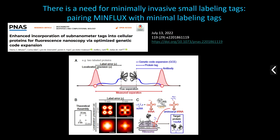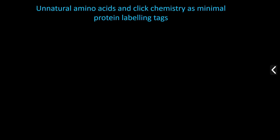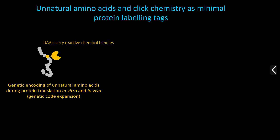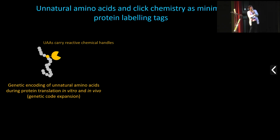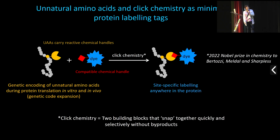This is discussed in a recent paper from Stefan Hell's group, where they introduce some of these minimal labeling tags, which are especially relevant when combined with MINFLUX. The approach is a two-step process: you first introduce so-called unnatural amino acids into your proteins — this can be done in vitro and in vivo by so-called genetic code expansion.